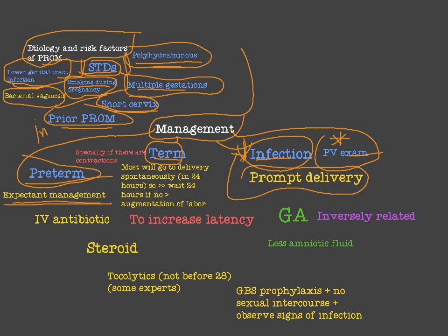What do we mean by expectant management? We observe the patient, give broad-spectrum IV antibiotic prophylaxis, and give steroids to mature the lungs — because we may need to deliver the baby unexpectedly. Oligohydramnios leads to decreased surfactant maturity and lung maturity, and may lead to lung hypoplasia. So: expectant management, broad-spectrum IV antibiotics, and steroids.